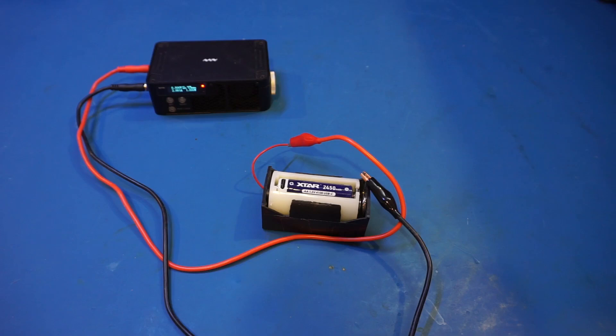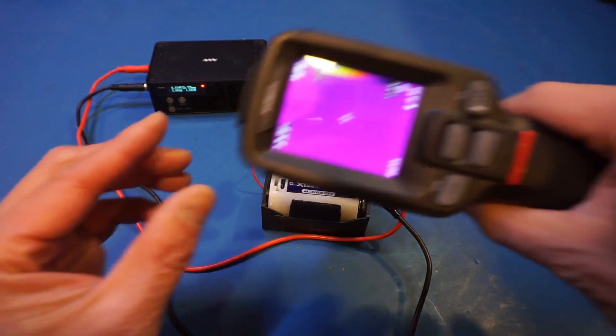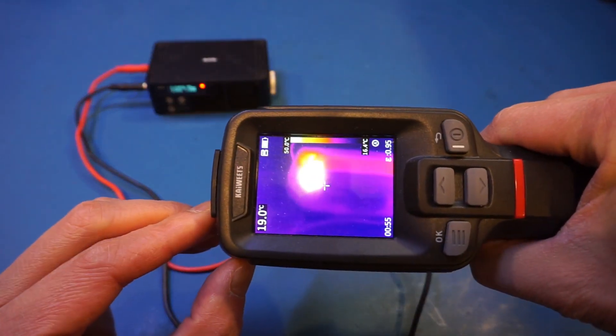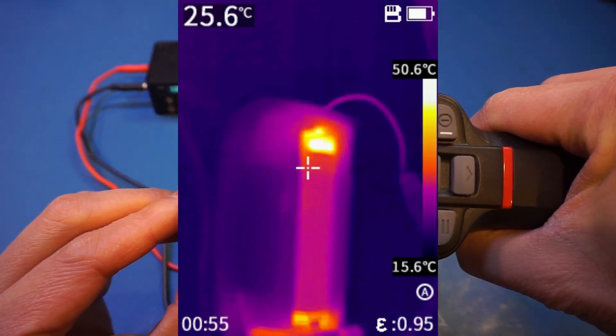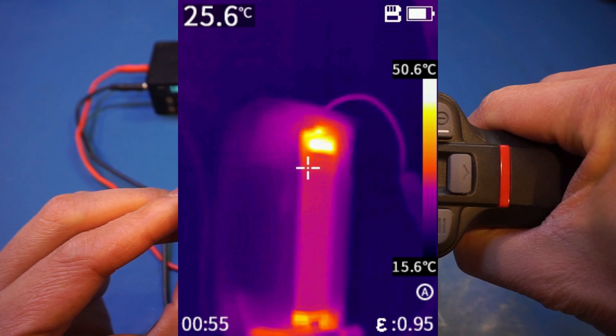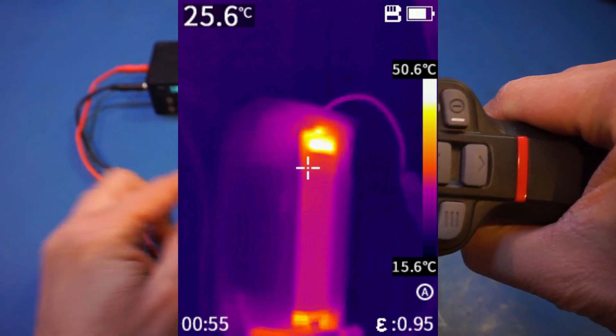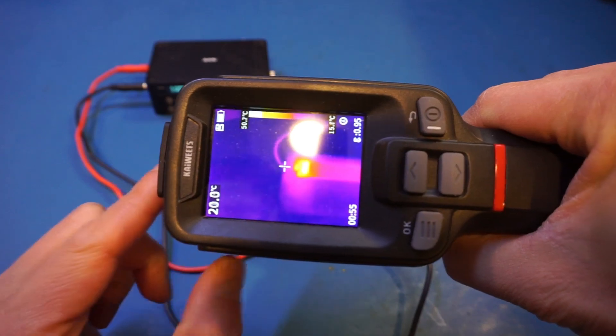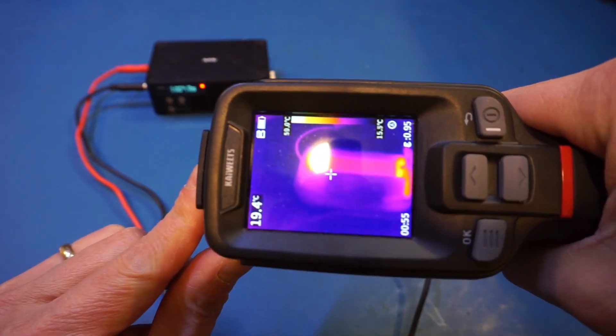I'll let it run for a few minutes and take a look with the thermal camera. It has been running for a couple of minutes. Let's take a look. You can see that we're actually approaching 50 degrees and it's still increasing. Of course, because of the circuitry at the top of the battery, that's where it's heating up as you can see in this thermal image.